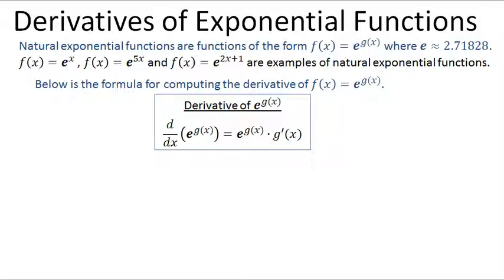In order to take derivatives of natural exponential functions, we need this formula. The derivative of e to a power, where the power is a function of x, is very simple: you take the e to the power of x and copy it down, then multiply by the derivative of the exponent g of x. So the derivative of e to the g of x is e to the g of x multiplied by g prime of x.